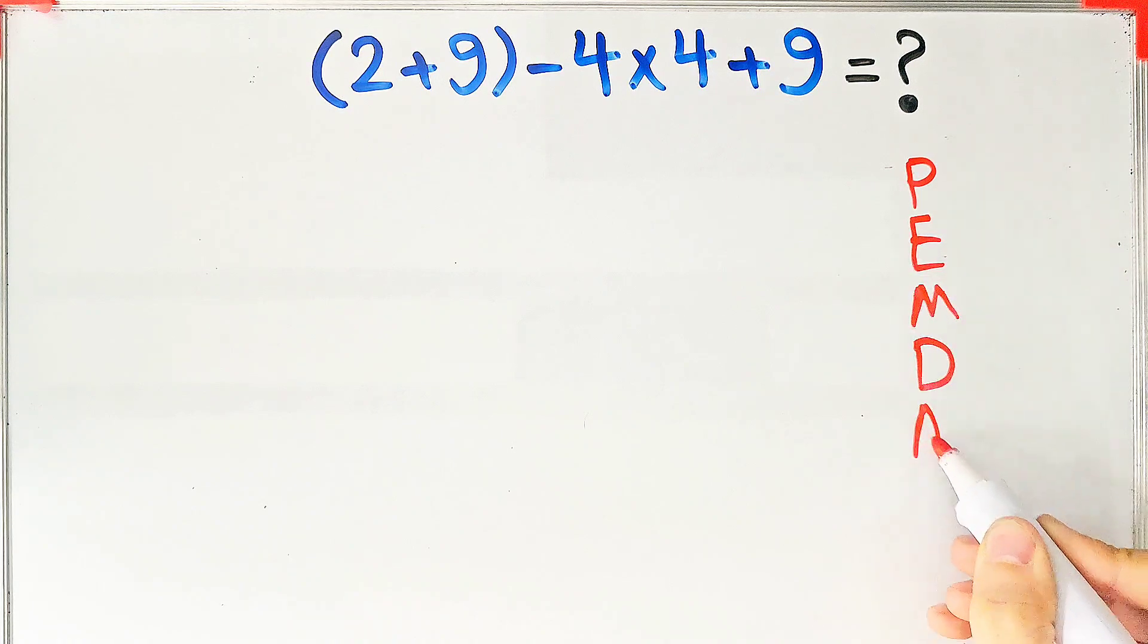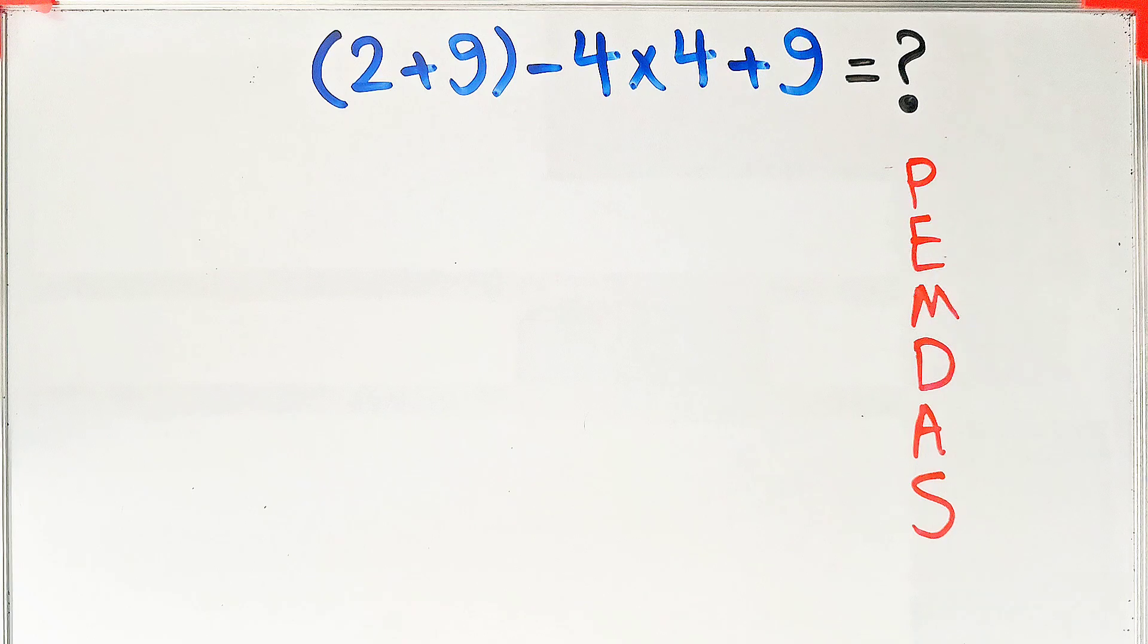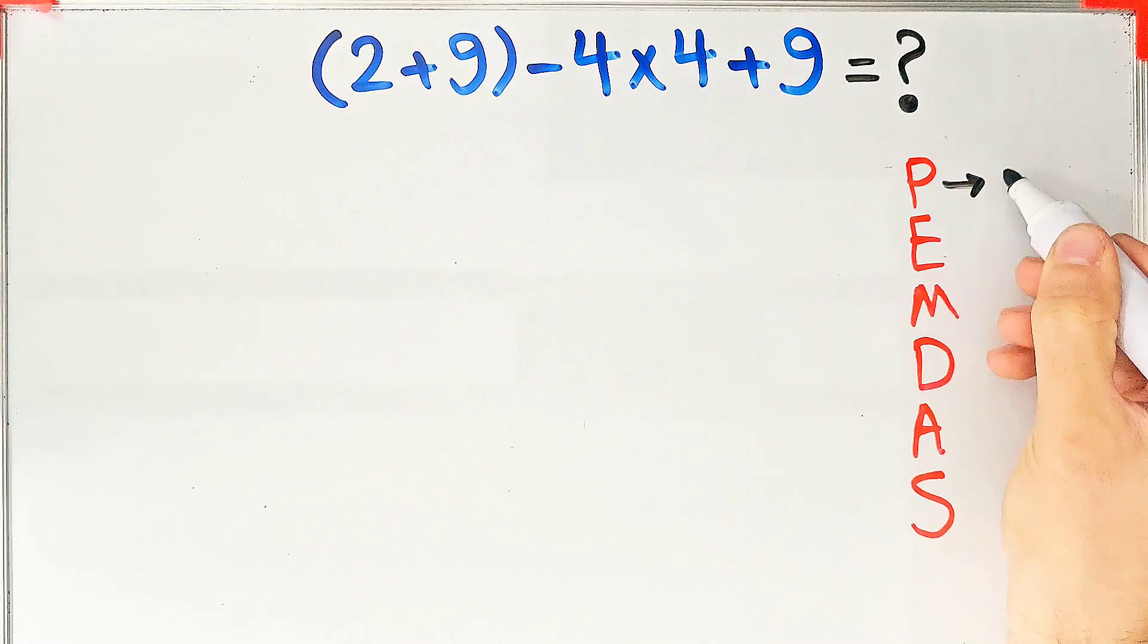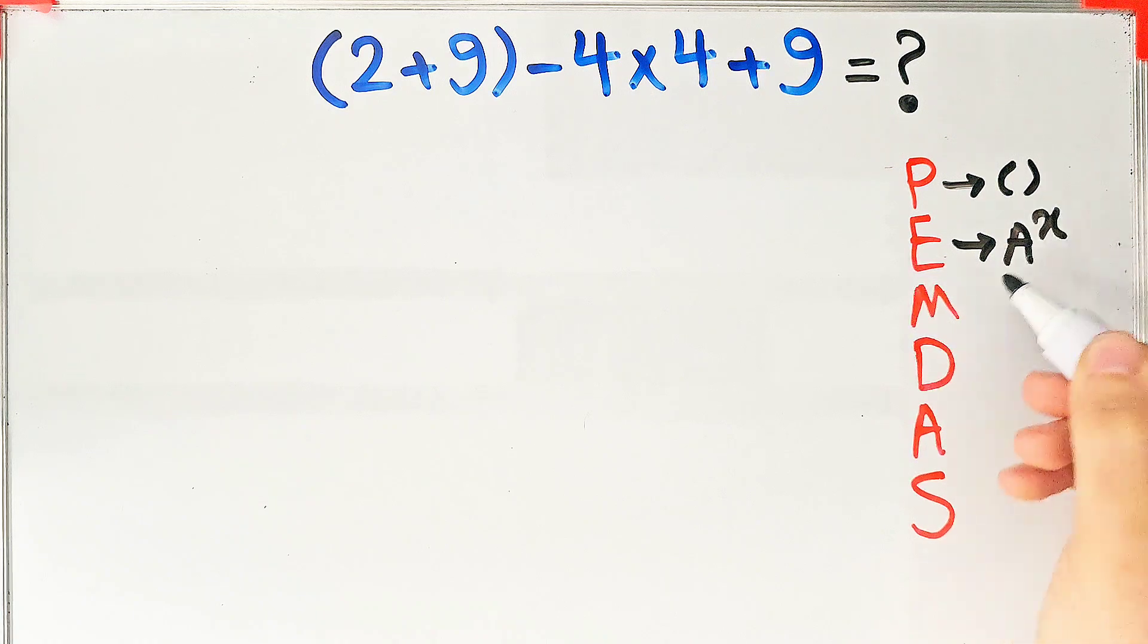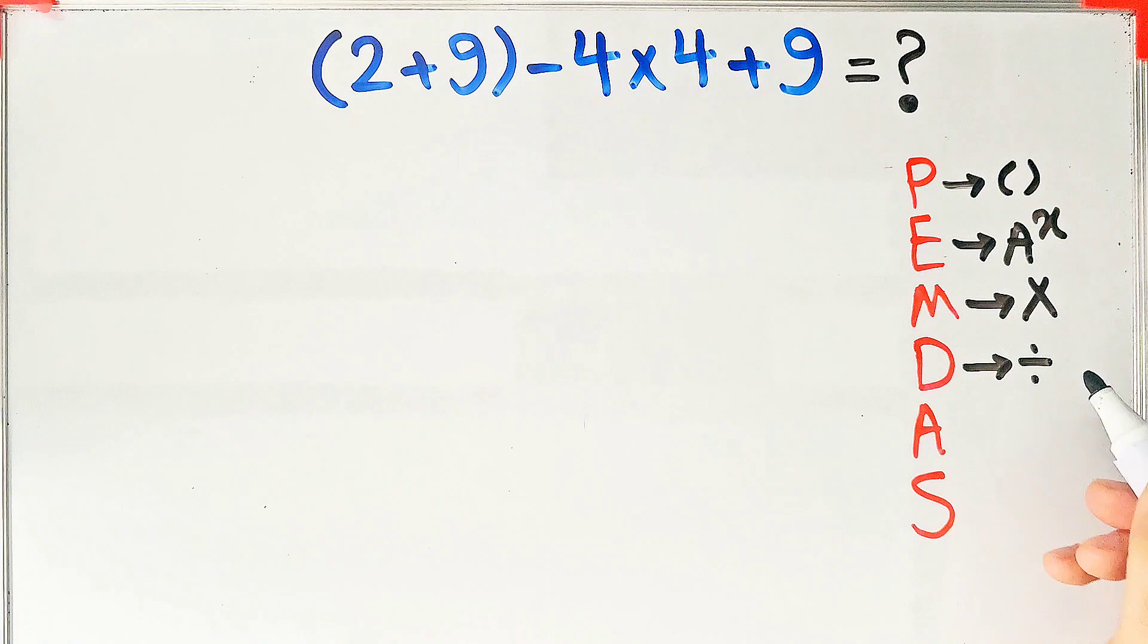If you don't pay attention to this rule, you get the wrong answer. In this rule, P stands for parentheses, E stands for exponent, M stands for multiplication, D stands for division, A...